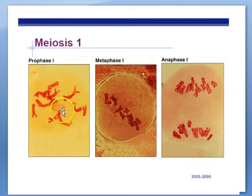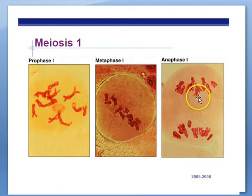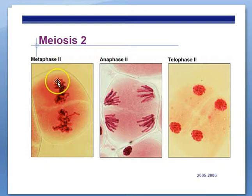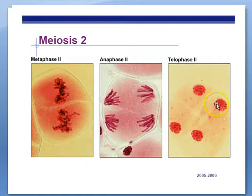Here are some pictures. Prophase I — chromosomes condensing. Metaphase I — homologous pairs lining up and pairing. Anaphase I — homologous pairs separate. Metaphase II — a single line of chromosomes getting ready for anaphase. Anaphase II — sister chromatids separate, which does not happen during anaphase I. Telophase II — daughter nuclei made, for a total of four cells.